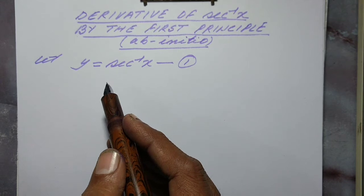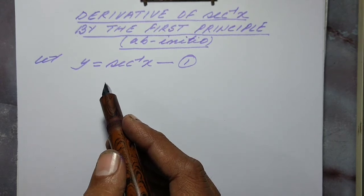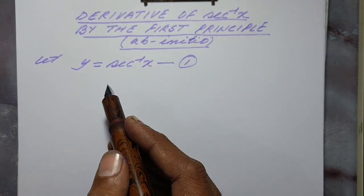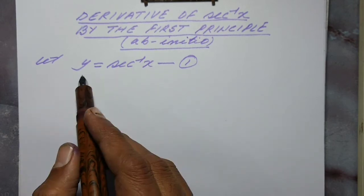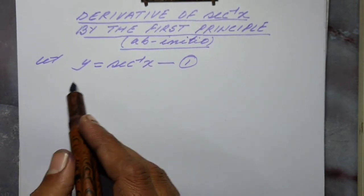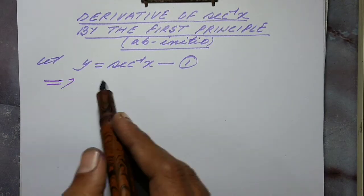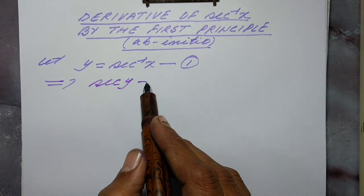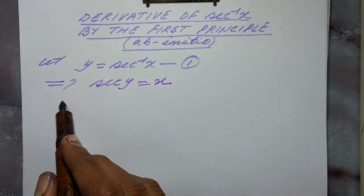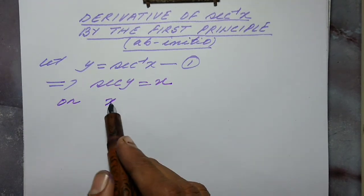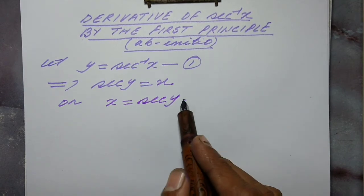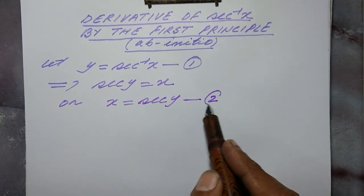Today I'm going to explain how to find the derivative of sec inverse x by first principle, which is also known as ab initio. So let y equal to sec inverse x, which implies that sec y is equal to x, or x is equal to sec y. Let this be equation number 2.